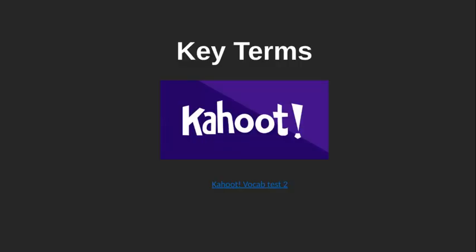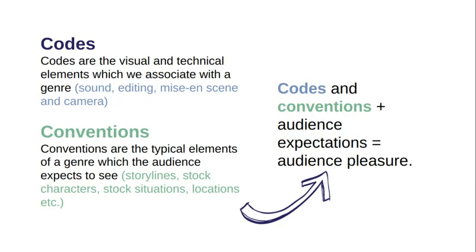Codes are the visual and technical elements that we associate with the genre, and they are also culturally understood. Looking at the Django Unchained poster, we saw that red splat on the page which suggests a gunshot wound. Conventions are the typical elements of a genre which the audience expects to see — typical narratives, particular characters such as protagonist and antagonist, and situations like escaping from the castle in the case of the vampire. Those codes plus conventions plus audience expectations create audience pleasure, persuading us to watch the film, programme or consume the text.